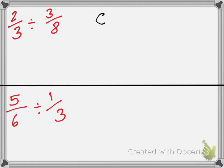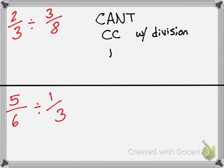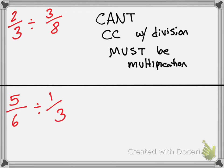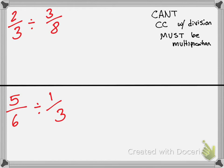The reason is you can't cross-cancel with division — it must be multiplication. So you can't cross-cancel right away with division. You can only cross-cancel once you get it to be a multiplication problem.